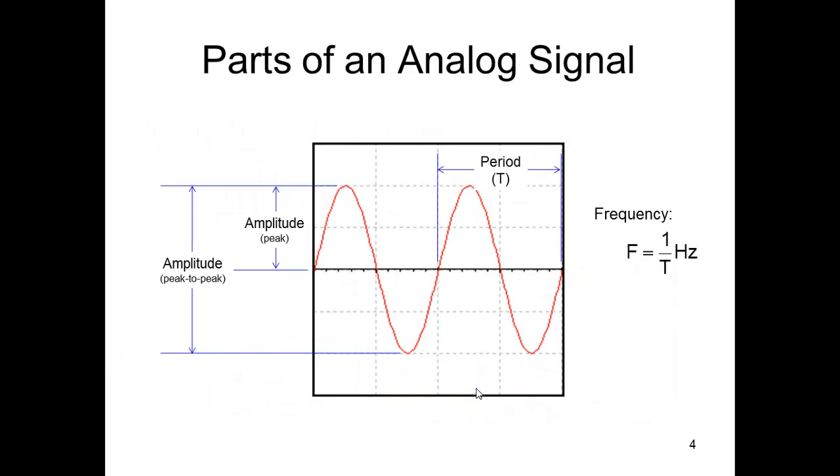Alright, so let's talk about the parts of an analog signal. This is the amplitude from the zero to the peak, and then this distance from here to here would be the peak to peak amplitude.